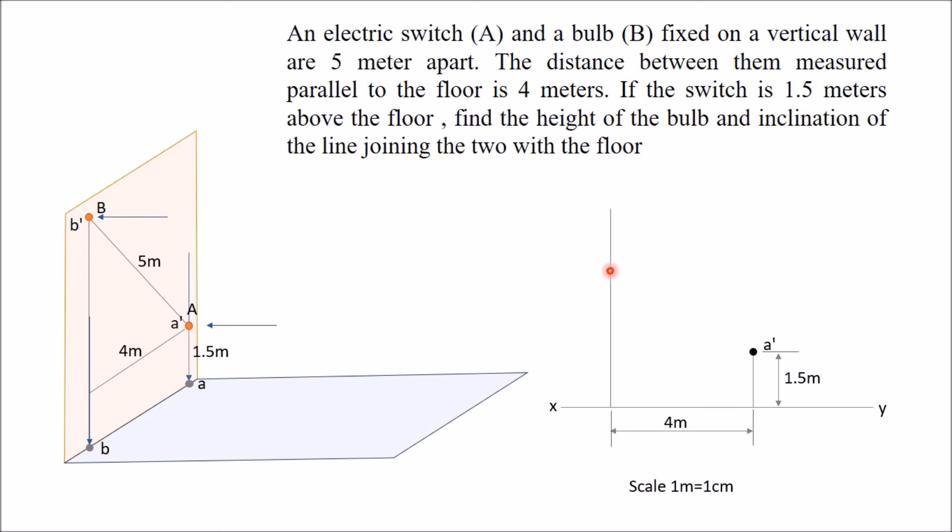We know that the distance of the bulb from this switch is 5 meters. So take A dash as center and radius equal to 5 meters, draw an arc. This radius of this arc is 5 meters and center is A dash. So this point will be your front view of bulb B dash. Join these two points. So this is the line, front view of the line joining A to B.